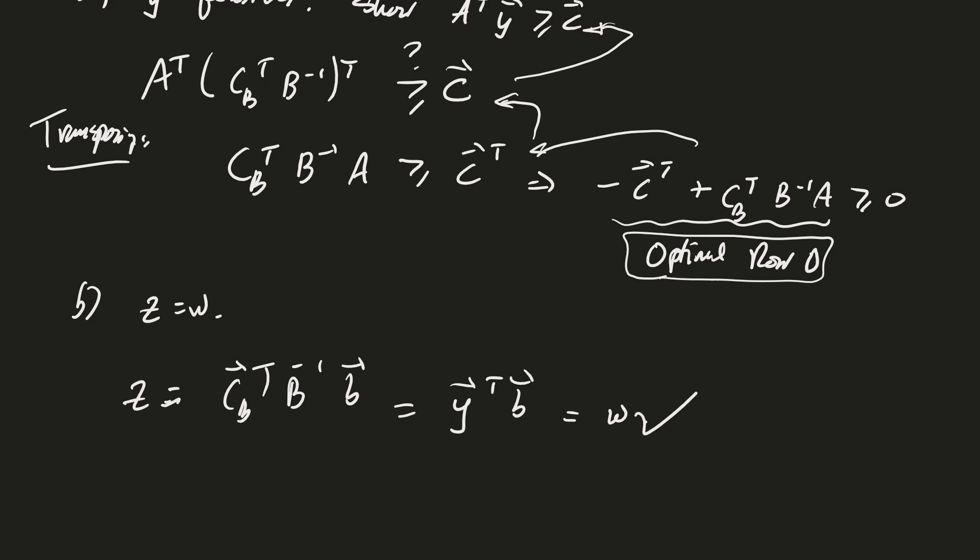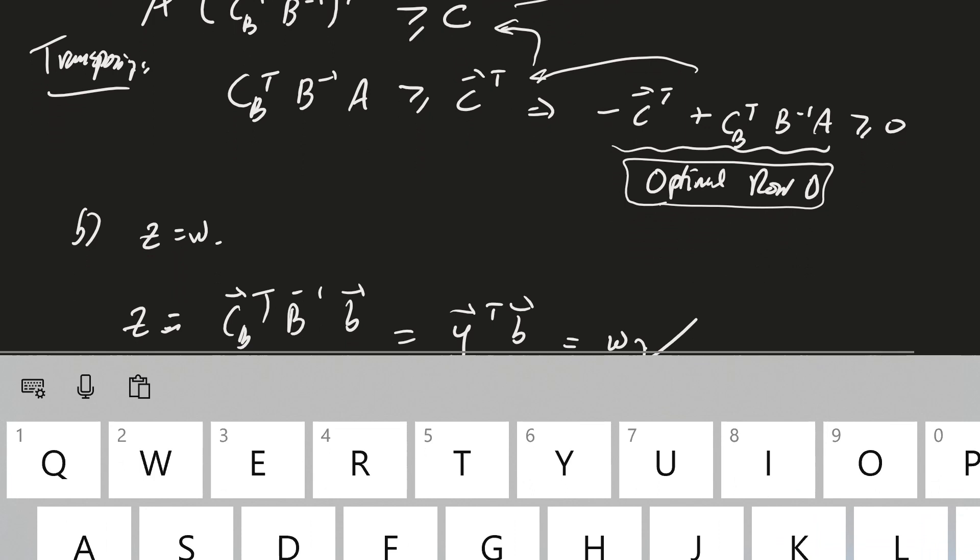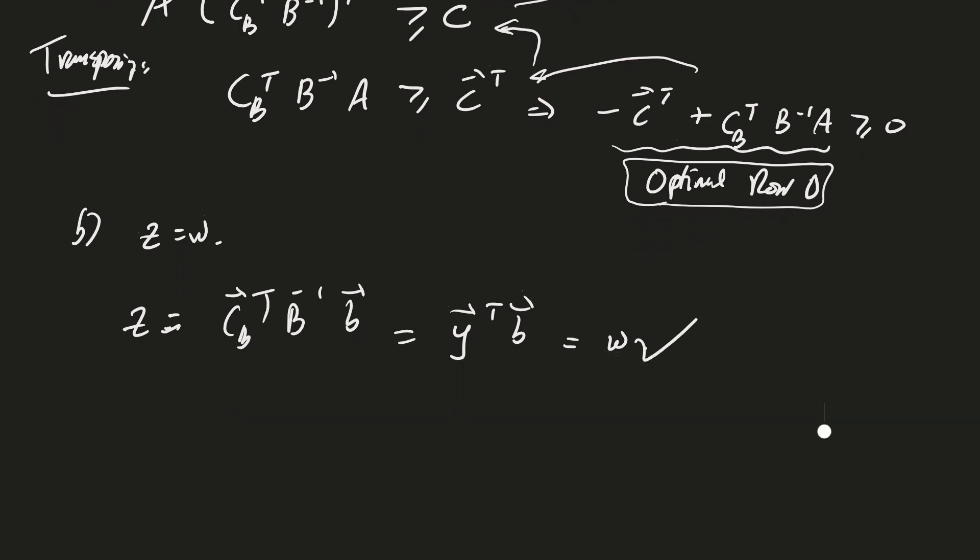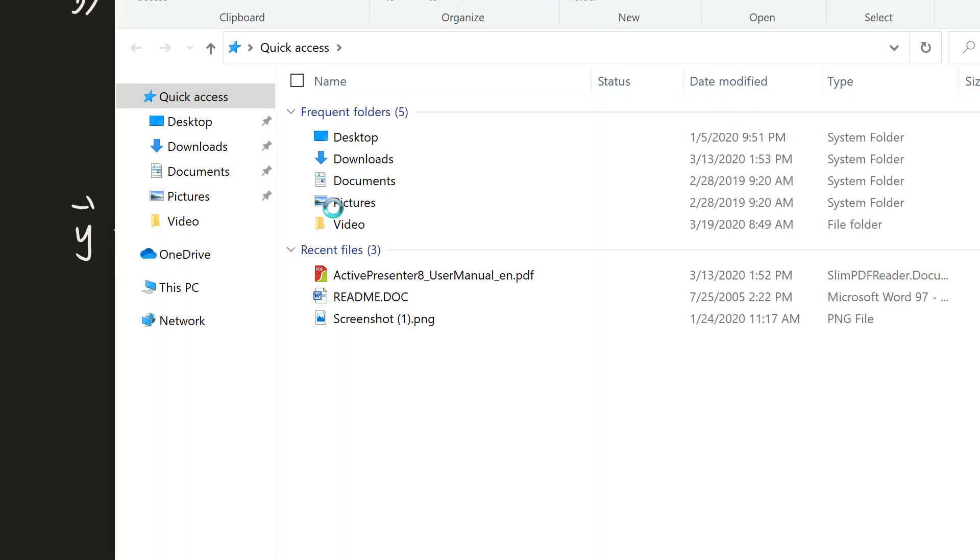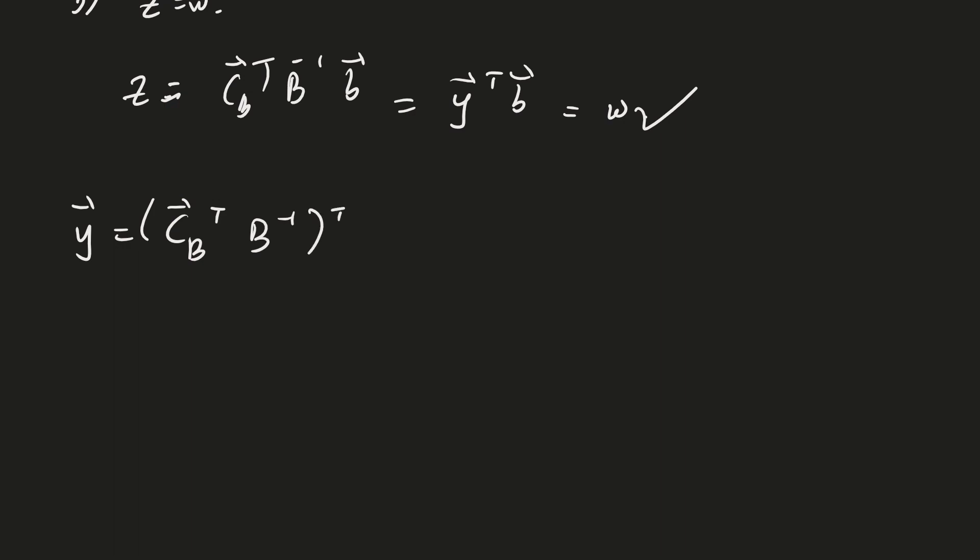So we now have the dual theorem. What we're going to do next is to figure out how to actually compute the dual, or compute the dual. I'll jump to a slideshow. But before I do that, let me just mention here that if y equals c_B transpose B inverse transpose, then how am I going to compute this easily? Well, think about row zero again.